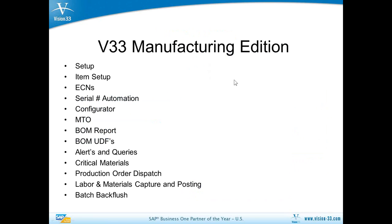Today the agenda is to take a look at the Manufacturing Edition covering these topics: the basic setup, item setup, how we handle engineering change numbers, how we automate serial number creation, the basic configurator, make-to-order automation, bond report and how we've made that easier to run, some UDFs we've added to the builds and material, alerts and queries that are available, the function we call critical materials planning, production order dispatch screen, and how we look at labor and materials capture and posting and batch back flush.